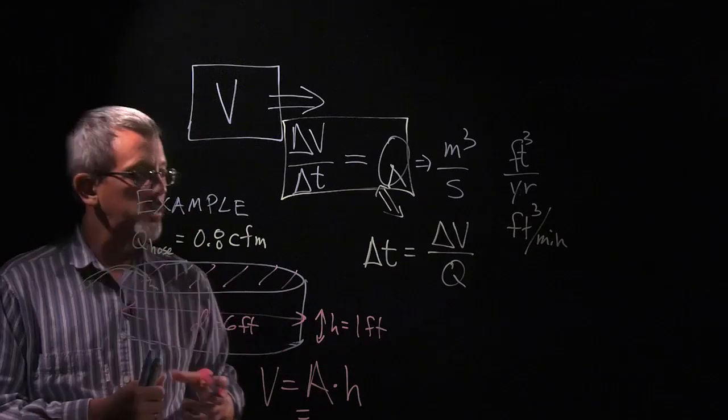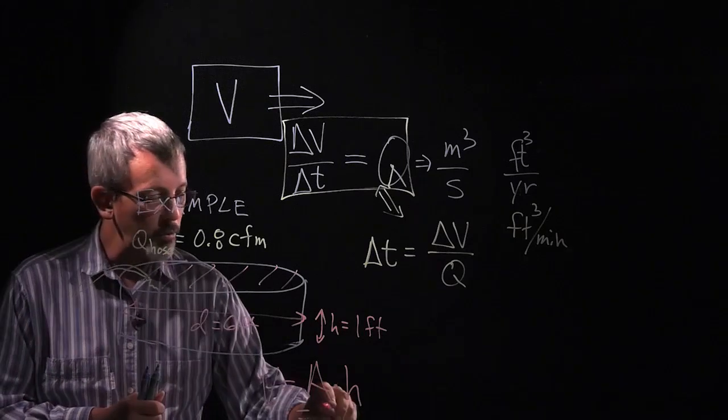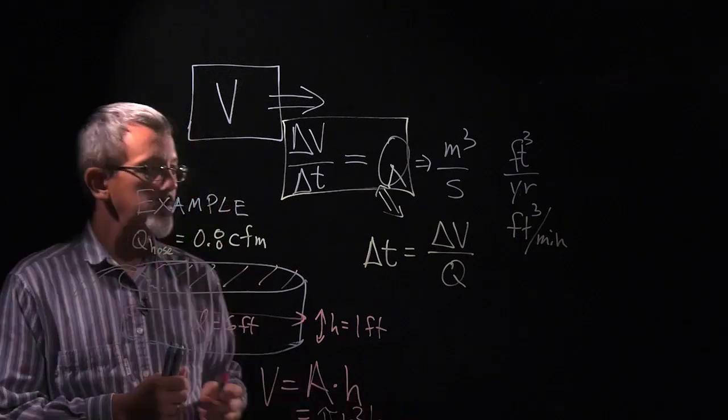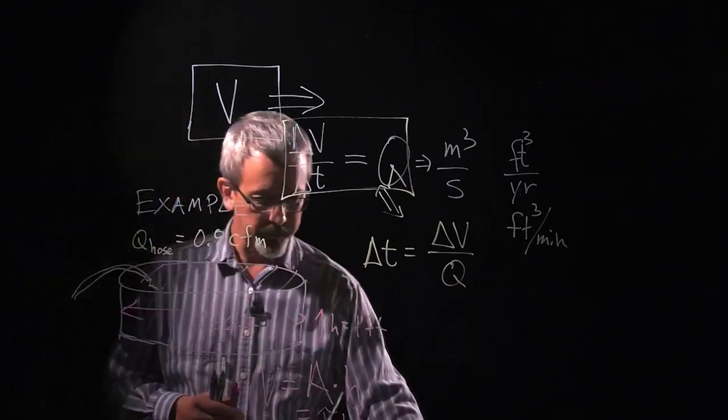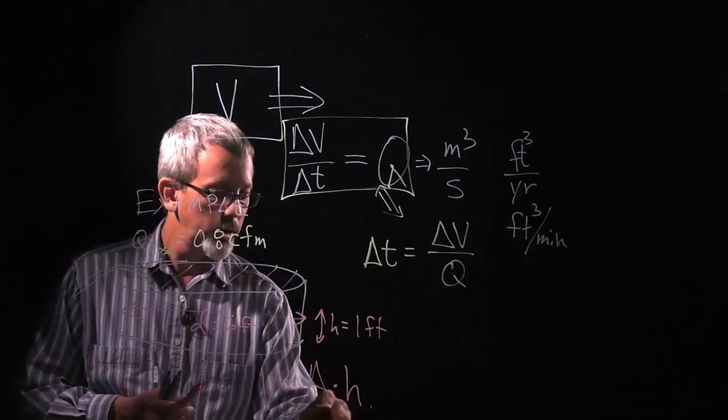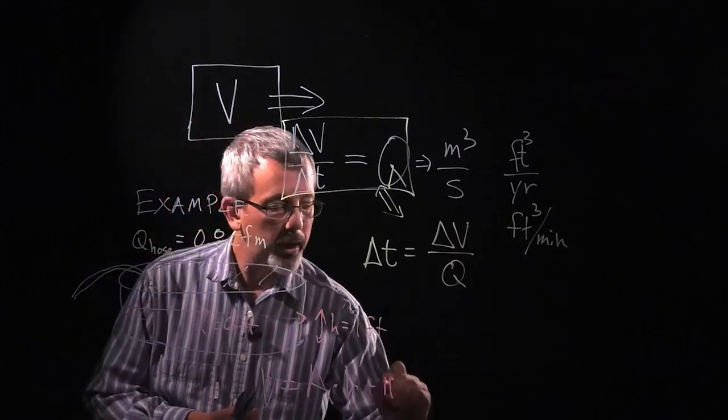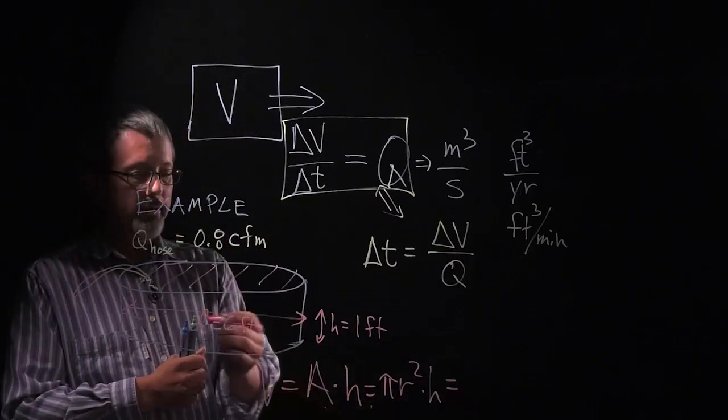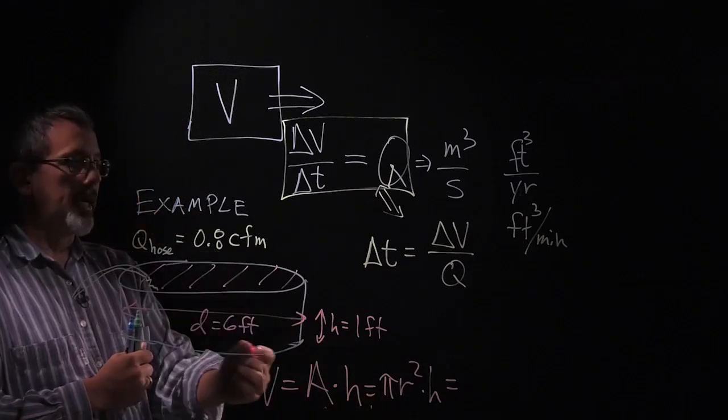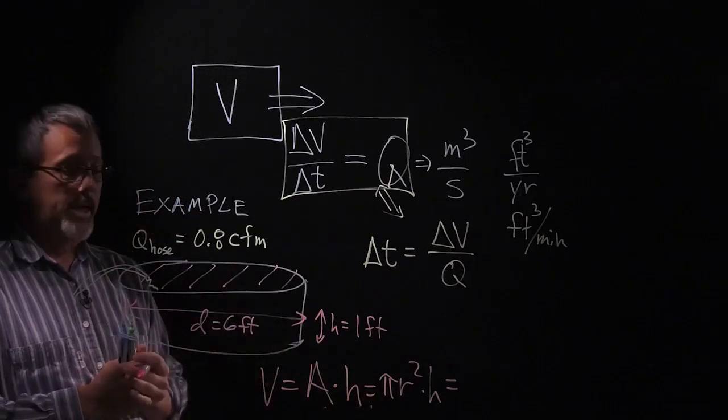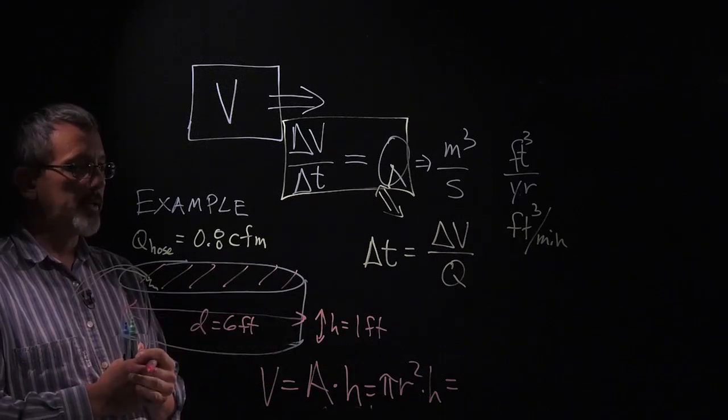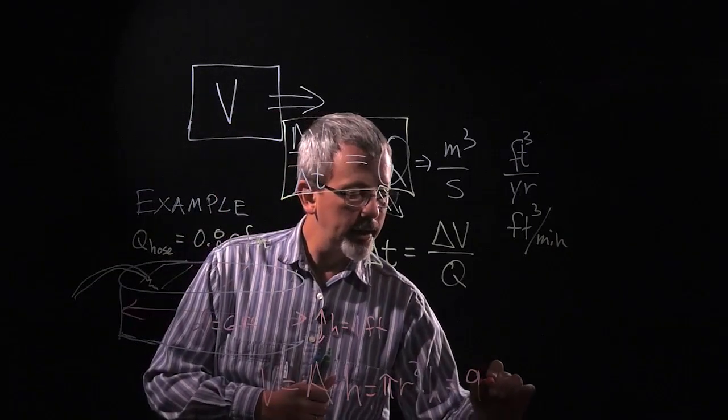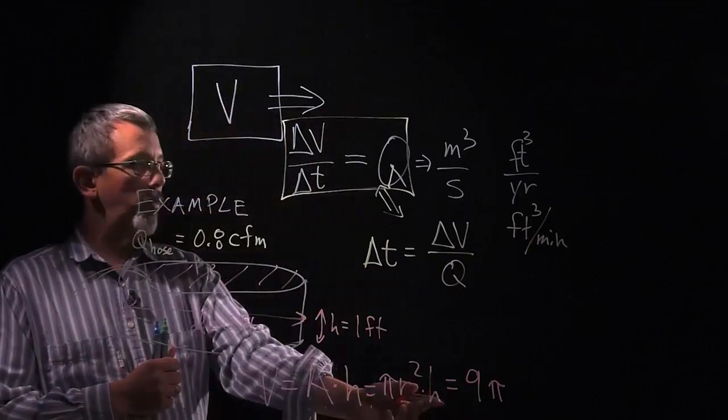Well that area is a circle, so we're going to have to go ahead and do pi r squared times that height. The area of that circle is equal to pi r squared times that height. Well if I look at my diameter of the pool of 6 feet, if I look at that diameter, divide that in half, that's 3 feet. And if I plug that in here for the radius, we get a value of 9 pi times the height of 1 feet.